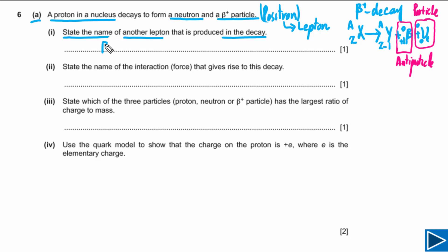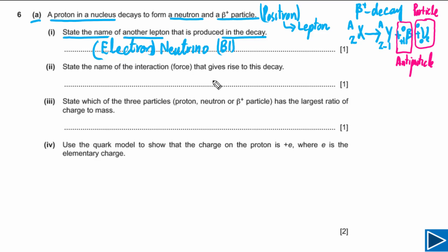For the answer to this question, simply write down electron neutrino. This question has one mark, and it is a B mark so it has to be in your answer. If you only write down neutrino you will still get one mark, but the proper way of writing is electron neutrino, because there are different types of neutrinos: electron neutrino, muon neutrino, and tau neutrino.